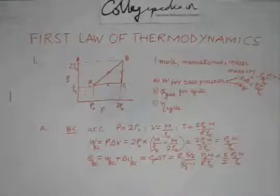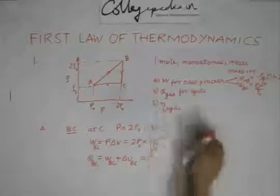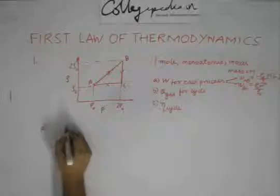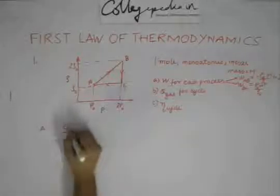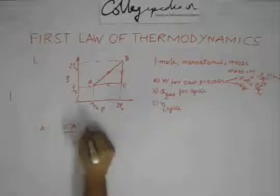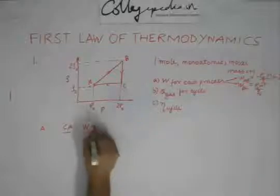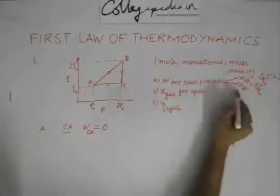For an isochoric process, which is the process C to A, the work done from C to A is going to be zero because this is an isochoric process. So we have found out another part.